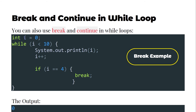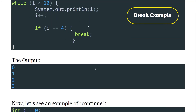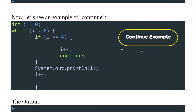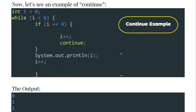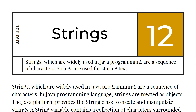Break and continue also work in while loops. If i equals 4 then break will exit the loop entirely. The continue example in a while loop works the same as in a for loop — it breaks out of one iteration and starts the loop again from the beginning. In the next lessons we are going to learn about strings.